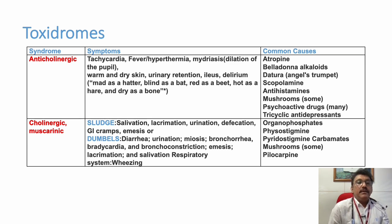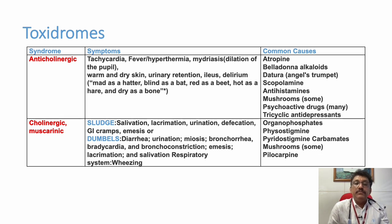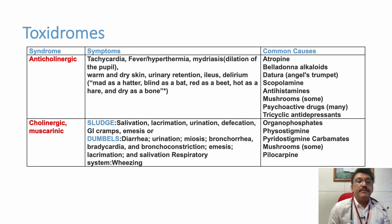Next is cholinergic muscarinic syndrome, remembered by the mnemonics SLUDGE and DUMBBELLS. The main poisons in this group are organophosphates, physostigmine, pyridostigmine, carbamates, mushrooms, and pilocarpine. Organophosphate and carbamate poisons are very common in our country. SLUDGE stands for: salivation, lacrimation, urination, defecation, GI cramps, and emesis — essentially all secretions in the body are increased.